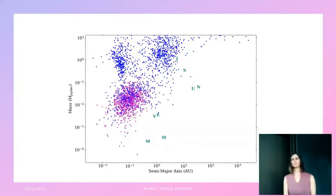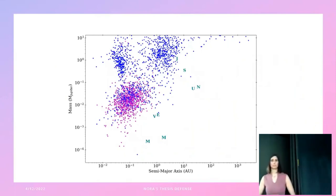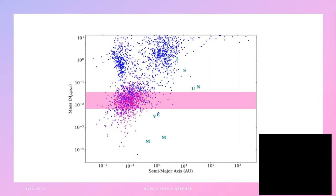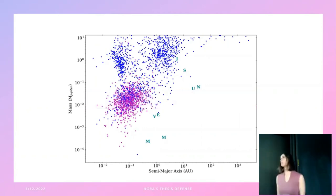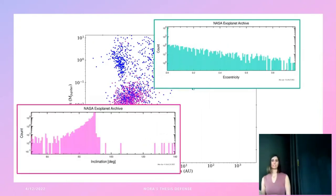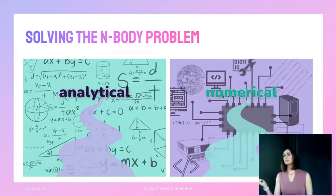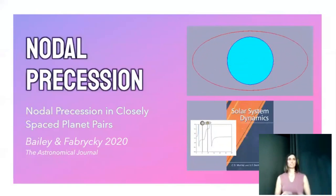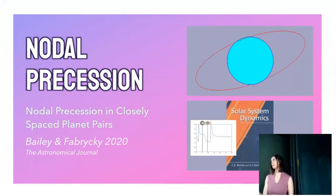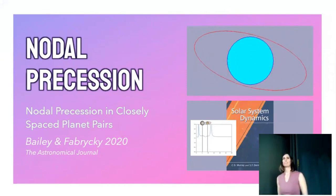It turns out many of these exoplanet systems are nothing like the solar system. A plot of known exoplanet systems shows they're really different — both in planet properties, like the very common super-Earths or mini-Neptunes that don't exist in our solar system, and in orbital properties: a wide range of semi-major axes, eccentricities, and configurations. This means many tools designed with the solar system in mind don't work as well for exoplanet systems, which brings us to the first project: nodal precession.